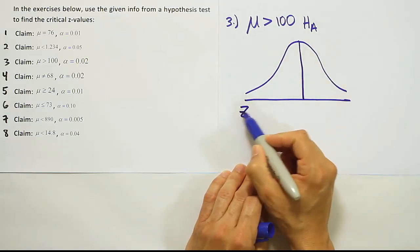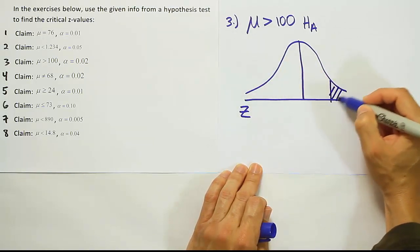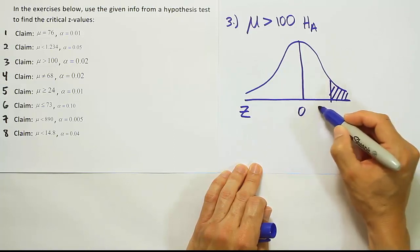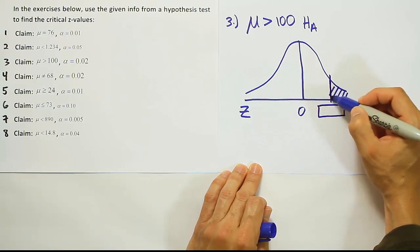Now from there we're going to draw a curve and realize that that greater than symbol means that we have a right tail test, a one tail test on the right hand side. So we'll be looking for the critical value that's located right here that starts the rejection region.